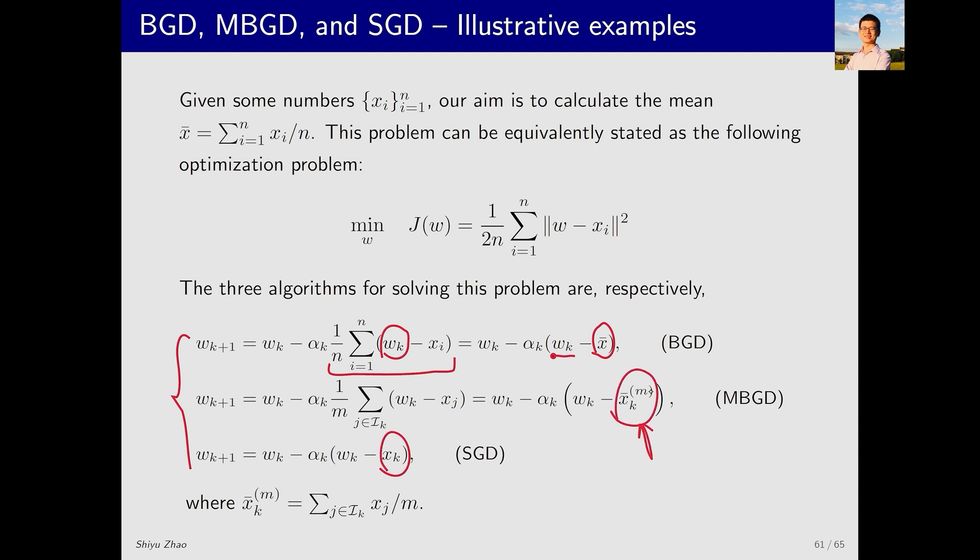For MBGD, we take M samples from the set, calculate their mean, and use that. For SGD, we take just one sample, making it X_k.